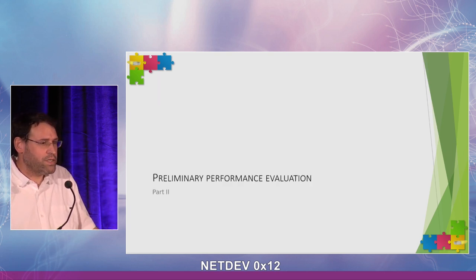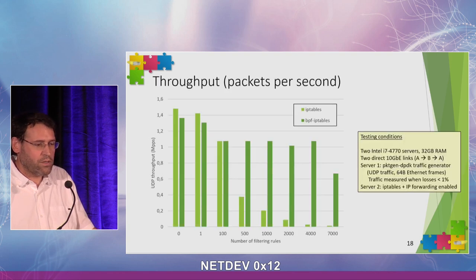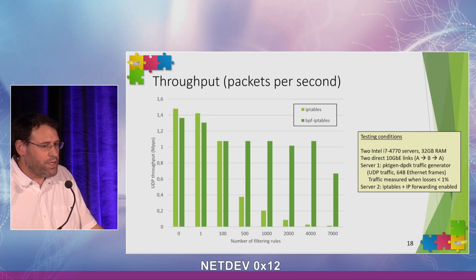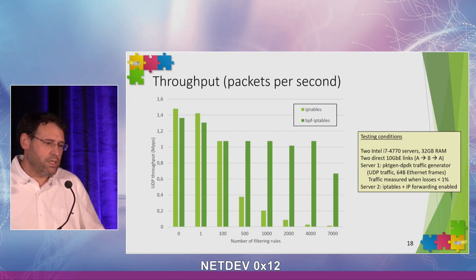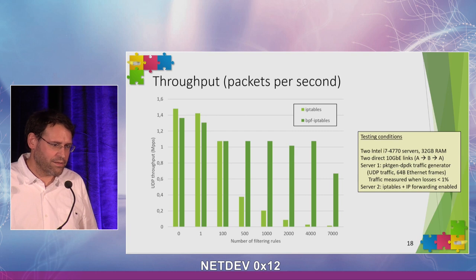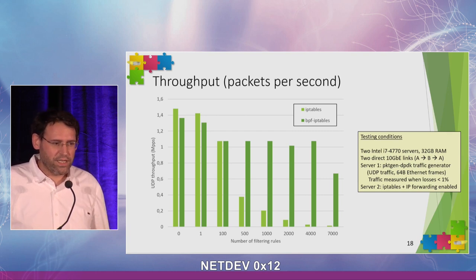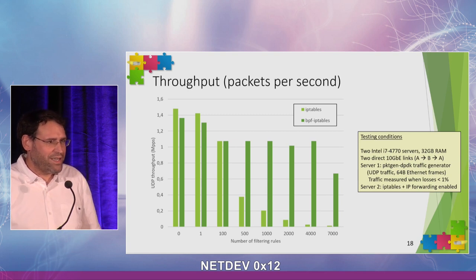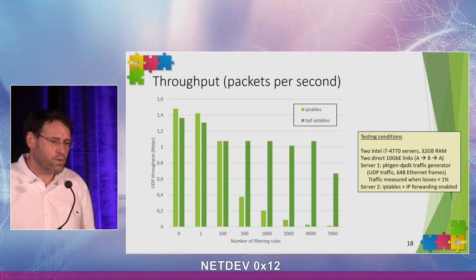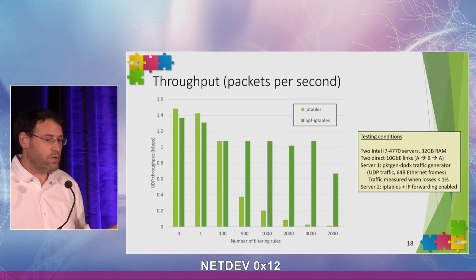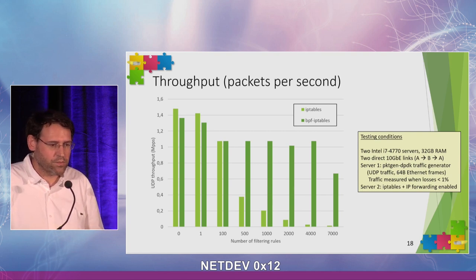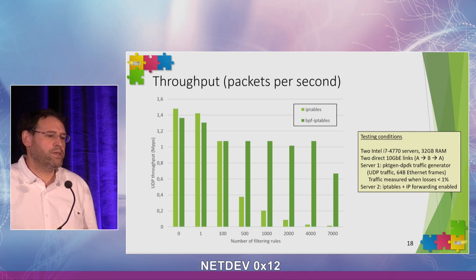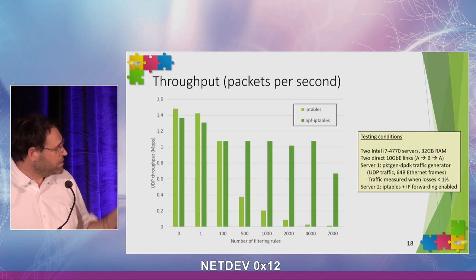Now, performance evaluation — is it really faster? As you increase the number of rules, up to 7,000, our implementation is definitely faster. It's not hard to beat a linear search. What is interesting is that we lose a little when the number of rules is very small — with zero or one rule, IP tables is faster. We're currently working on closing this gap; there are some map lookups that can be avoided and optimizations to be done.